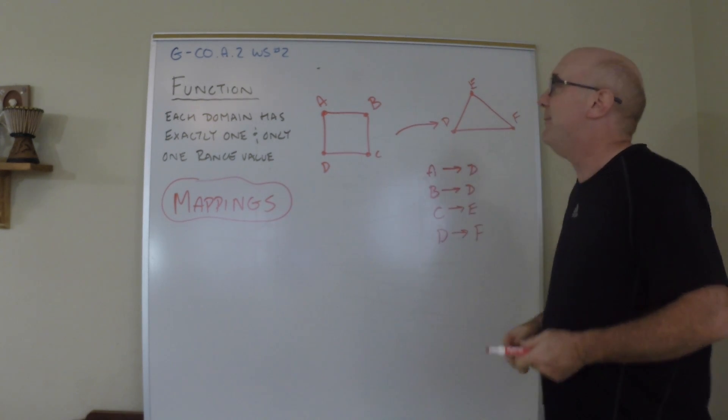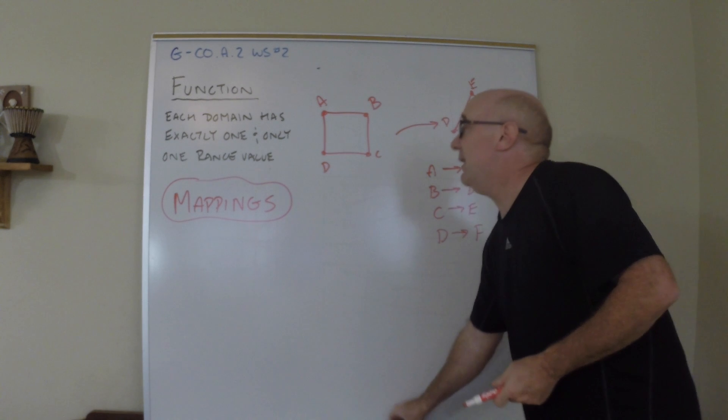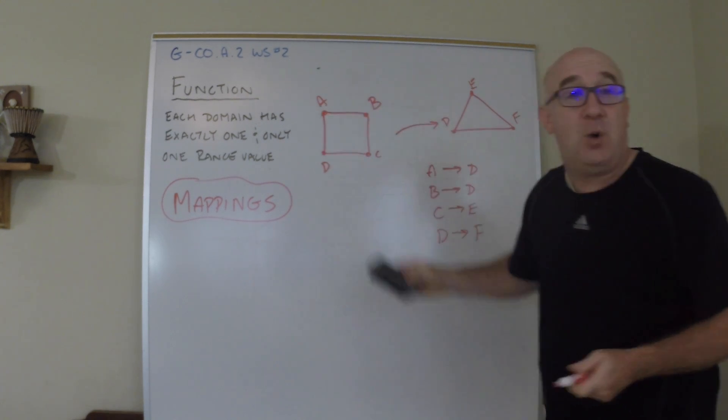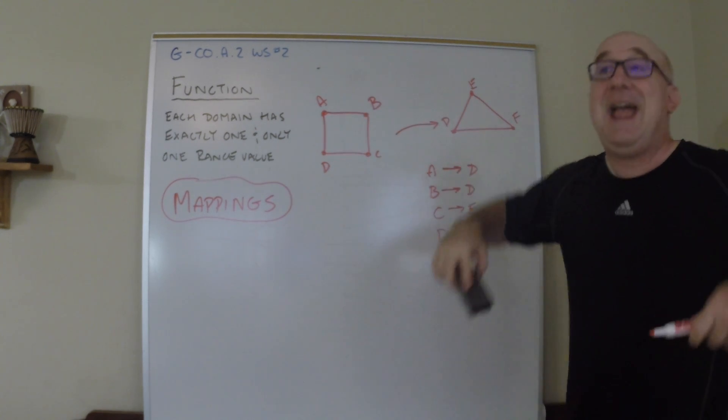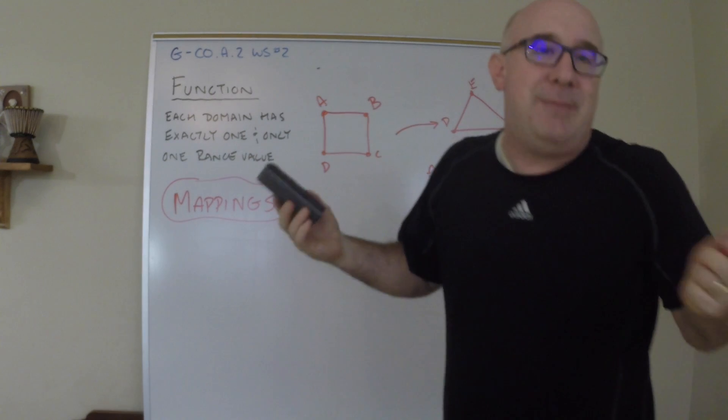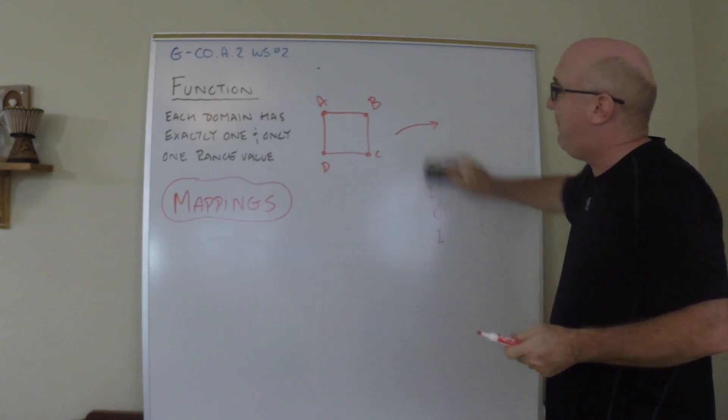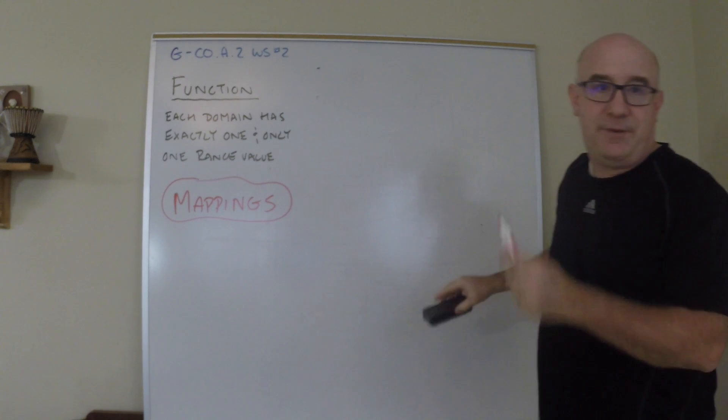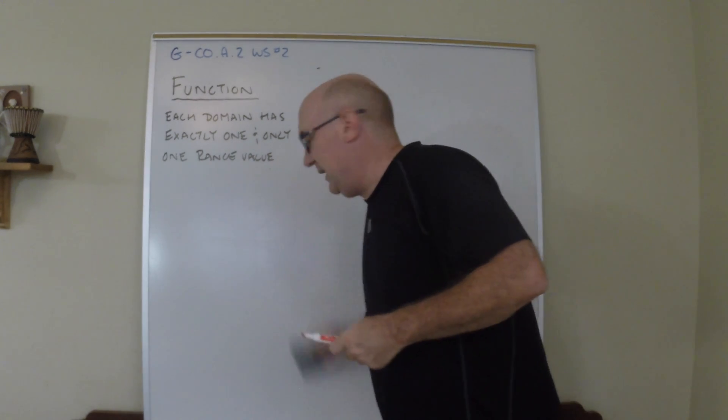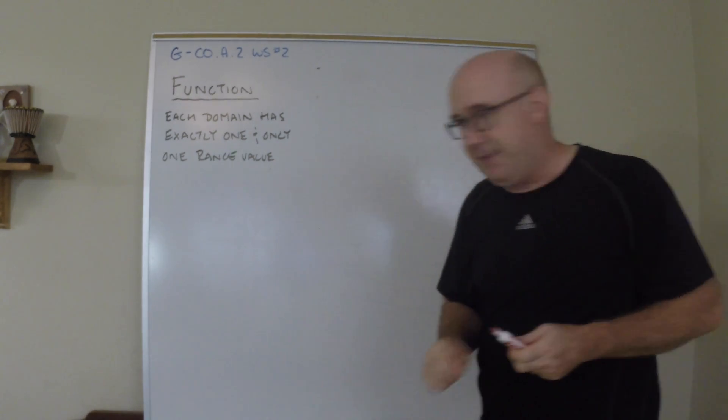Certainly we want it where we start with four points, and when we're done, whatever it may look like, it's still got four points. So a mapping allows for that mess, so we want to be a little more specific.